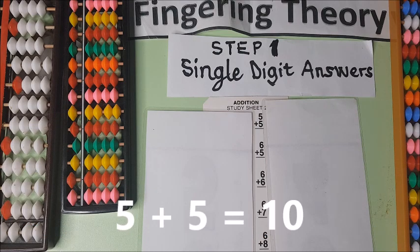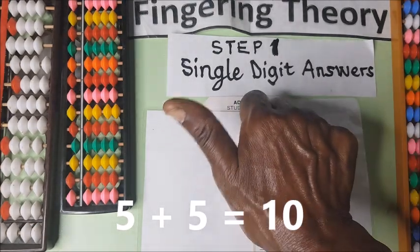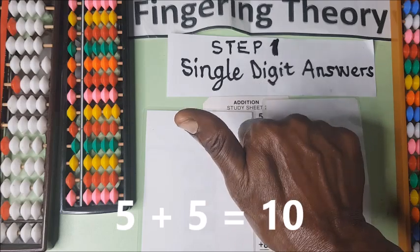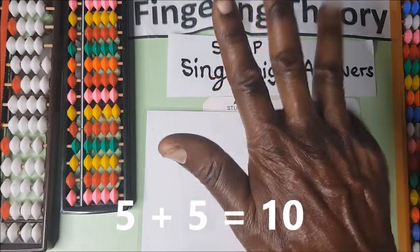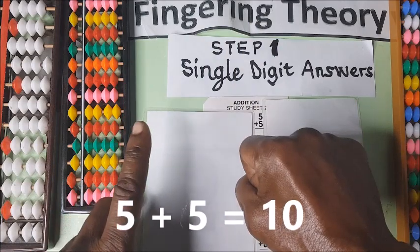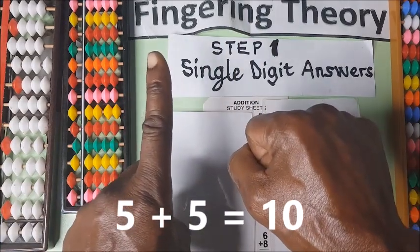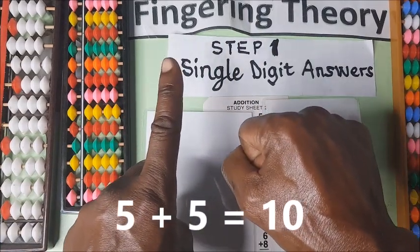Five plus five. The thumb under your right hand is five. So you're going to count five more. One, two, three, four. You hold your fist and then you shoot up the pointing finger on your left. That is ten.